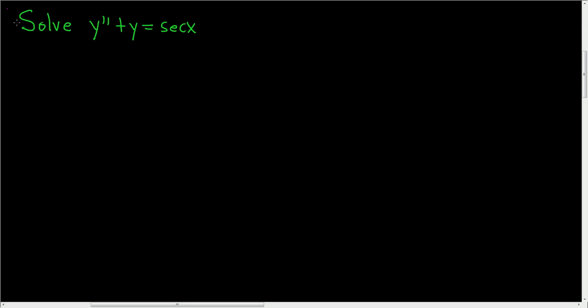Solve y double prime plus y equals secant x. We're going to use variation of parameters. The first step is to make sure that your differential equation is in standard form — that means make sure the leading coefficient is 1. In this case, there's no issues there.